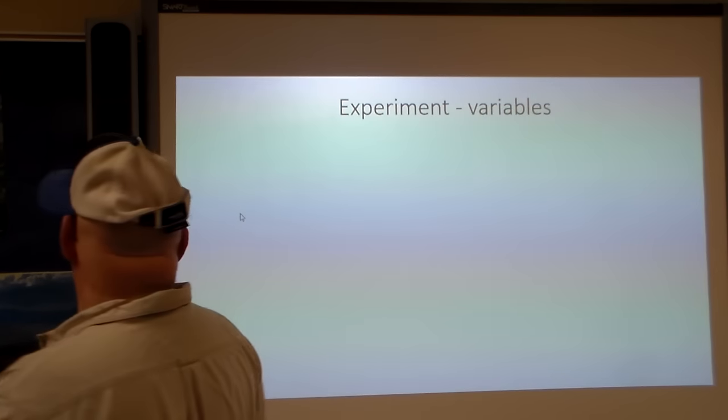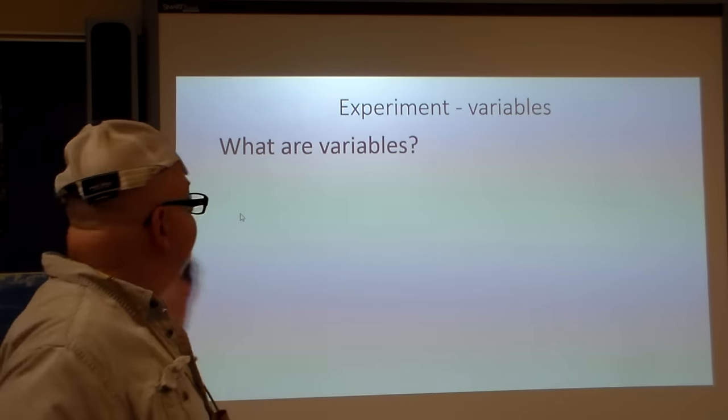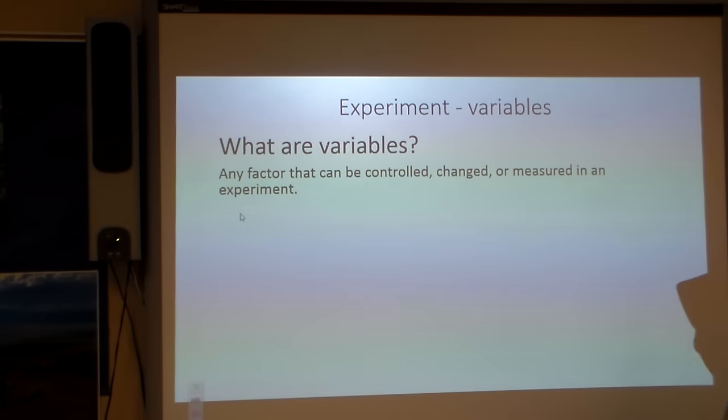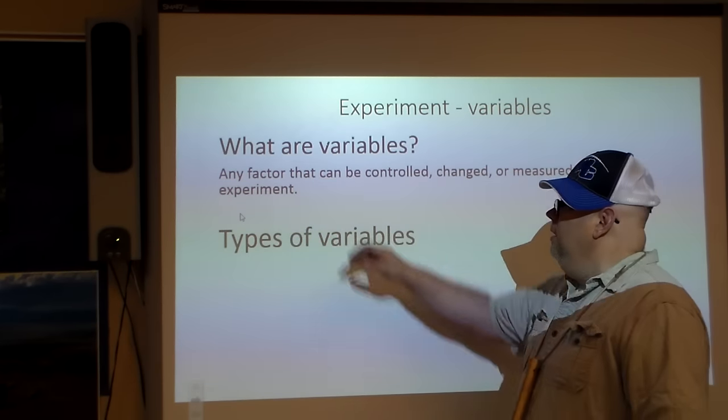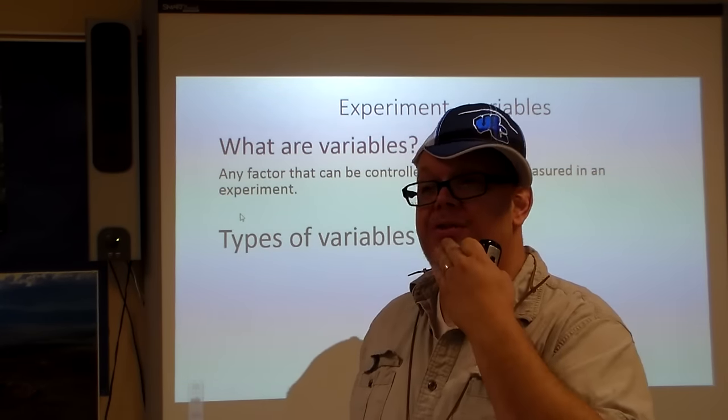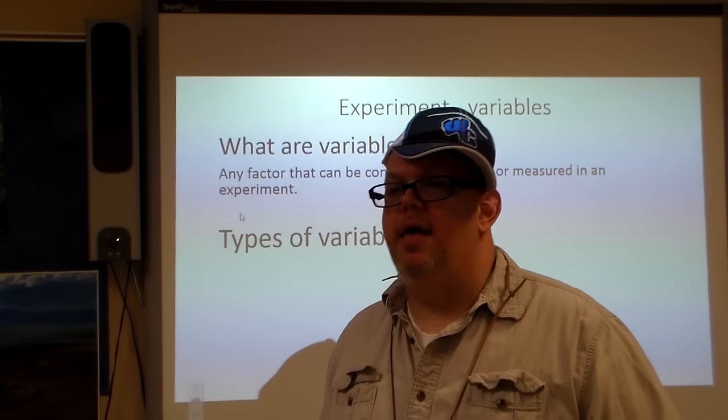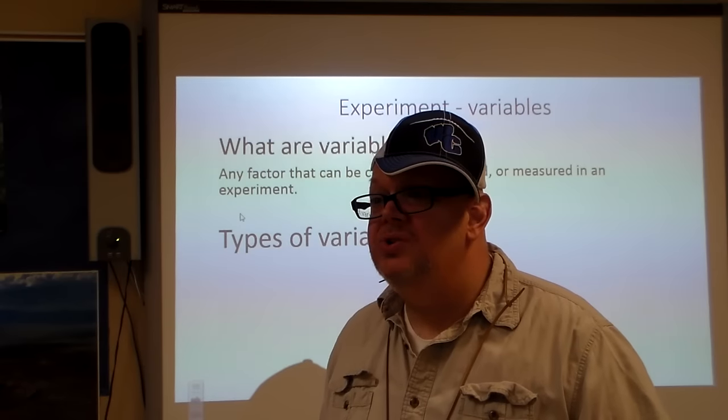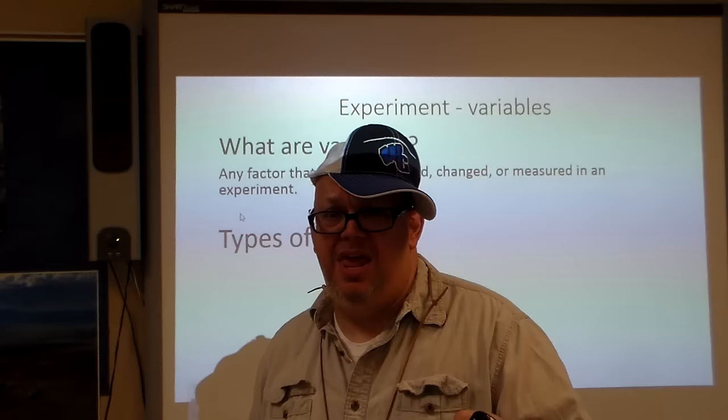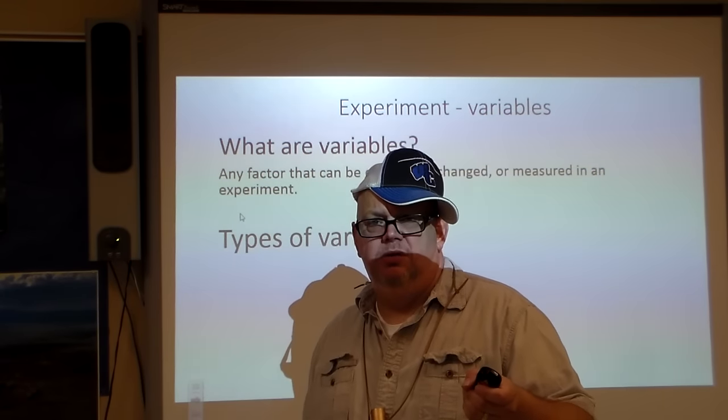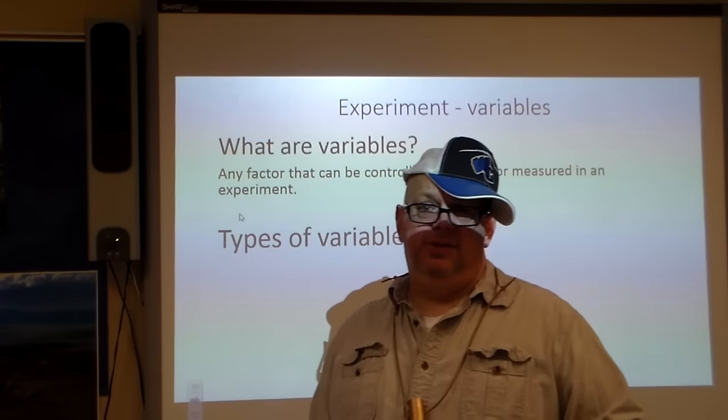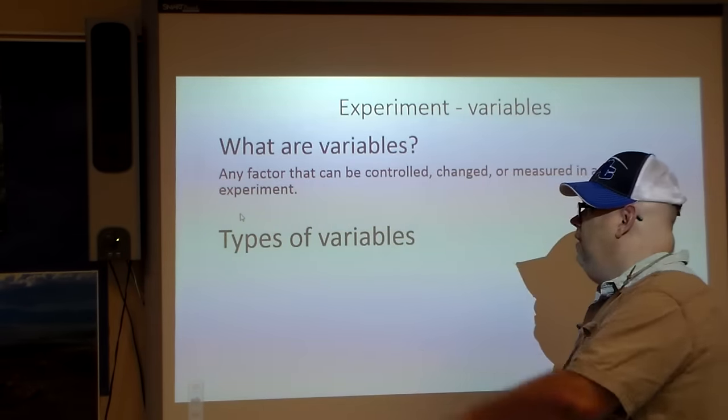Now we've got a hypothesis. We're going to test that sucker out. What is that going to look like? Well, we have to look at variables. So a factor that can be controlled, changed, or measured in some kind of an experiment. Types of variables. What would be a variable if you had to go and you were buying a car? What would be a variable that you'd have to control? Maybe the money that you have. If you have $1,000, chances are you're probably not going to get that Mercedes that's brand new candy apple red with the engine of doom on it.